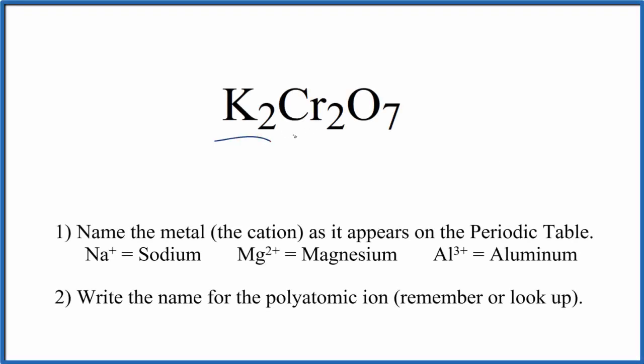To write the name for K2Cr2O7, first we need to recognize that K, potassium, that's a metal, and then the Cr2O7, this is a polyatomic ion. It's called the dichromate ion. So we're going to use these rules here to write the name for K2Cr2O7.